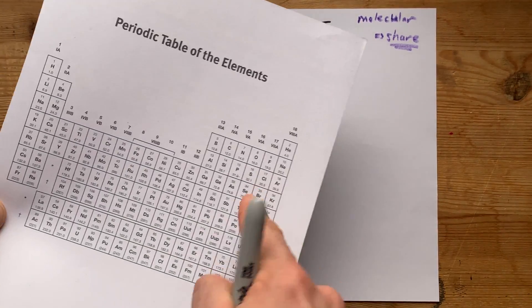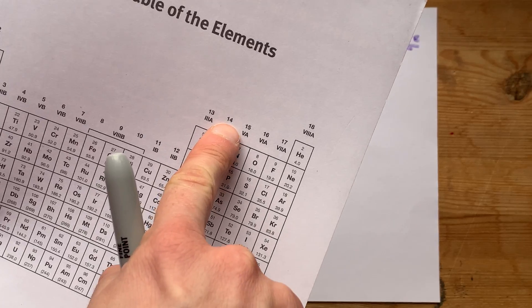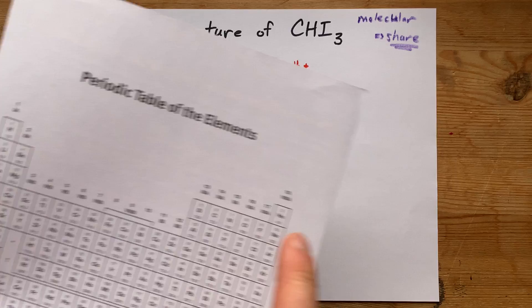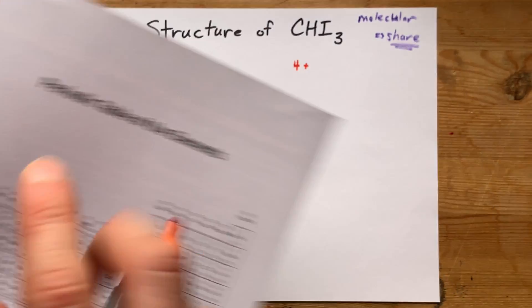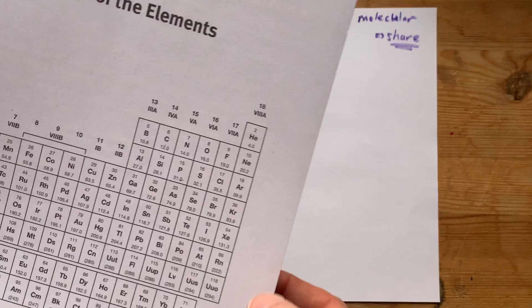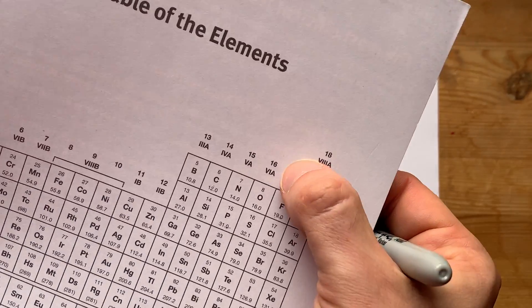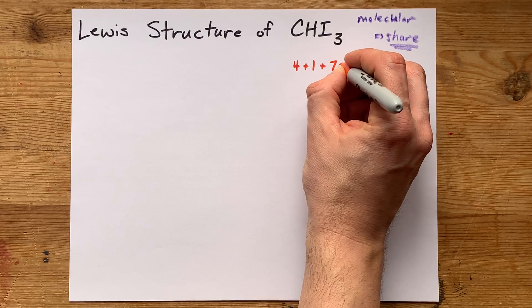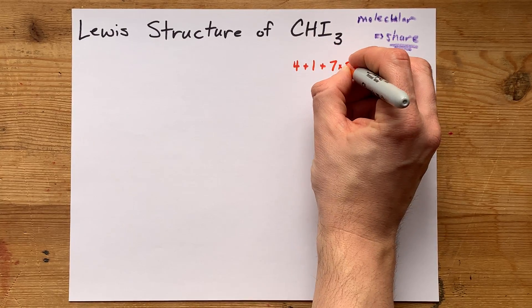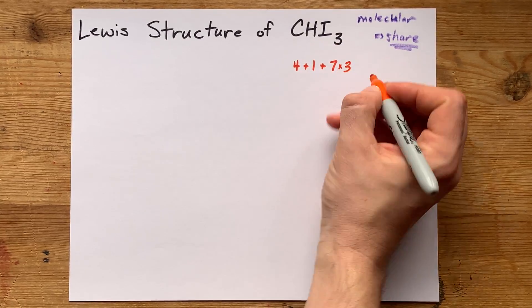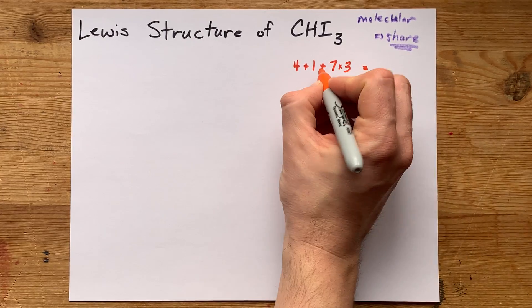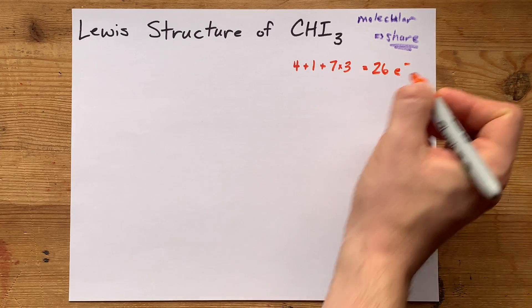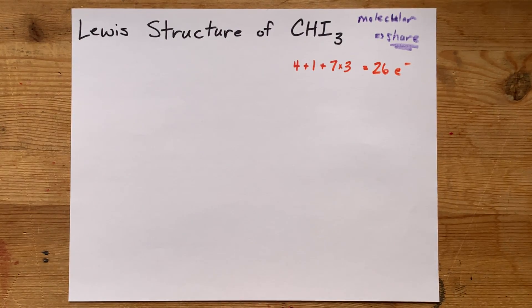How many electrons? Well, carbon in group 14 brings four valence electrons. Hydrogen in group 1 brings one valence electron. And iodine in group 17 brings seven valence electrons. Now there are three iodines, so I have to multiply that seven by three. That's 21 plus 1 plus 4, which makes 26 electrons total in this structure.